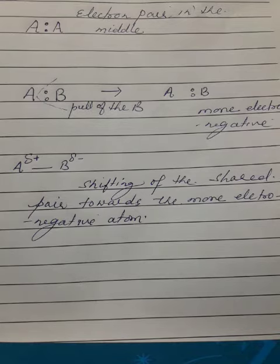According to Pauling, the shared pair of electrons shifts towards that atom which exerts a greater pull on it. Such an atom is said to be more electronegative.